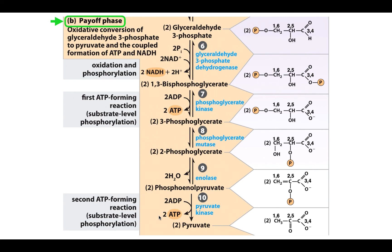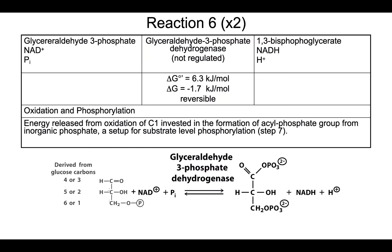In addition, we are using two NAD+, these are electron carriers to strip electrons from these molecules to produce two NADH. Now those are potentially going to produce some ATP as well, depending on whether or not there is oxygen available, depending on what cell type we're looking at. We'll get to NADH a little bit later.